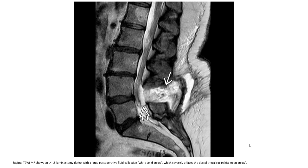Sagittal T2WI MRI shows a laminectomy defect with a large post-operative fluid collection indicated by the slip arrow, which severely affects the dorsal thecal sac, as indicated by the open arrow.